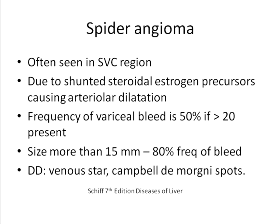Another condition to differentiate is Campbell de Morgan spots, which are nothing but angiofibromas. These are cherry-red spots seen on the abdominal wall, commonly in elderly individuals, increasing in number with age. They are not blanchable and can be palpated as a firm reddish nodule on the skin, making them easy to distinguish from spider naevi.